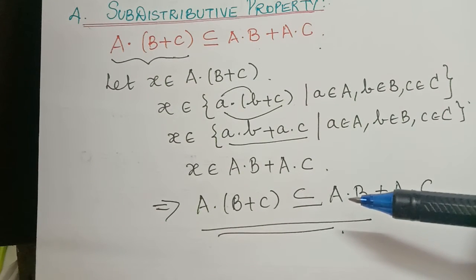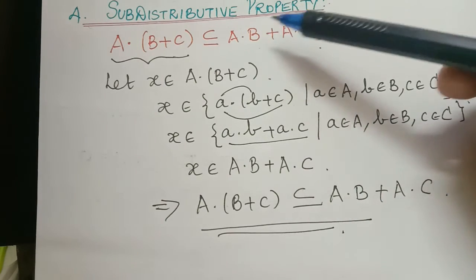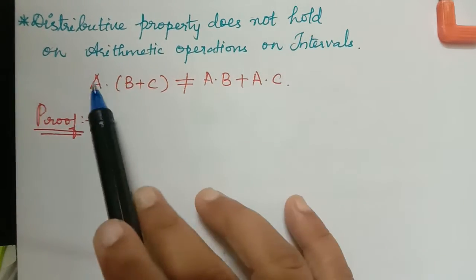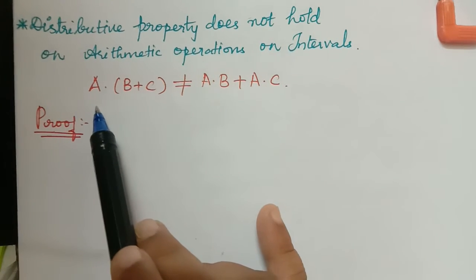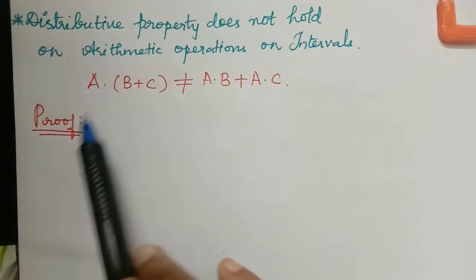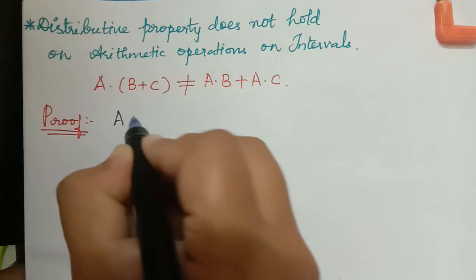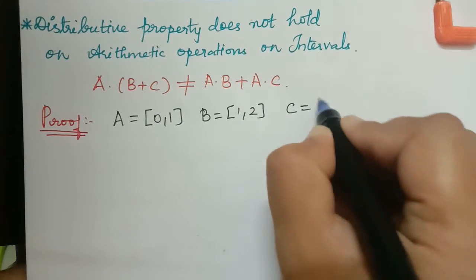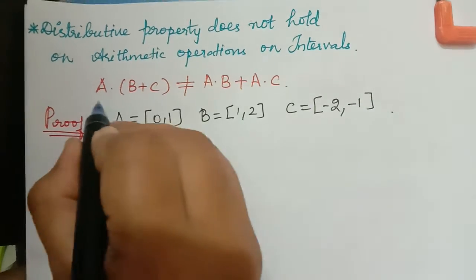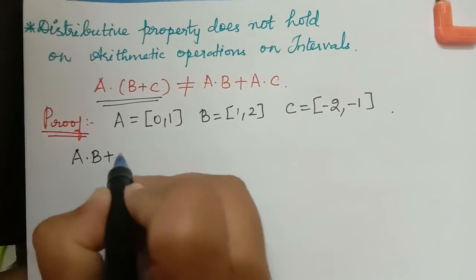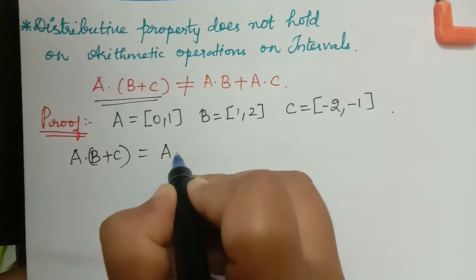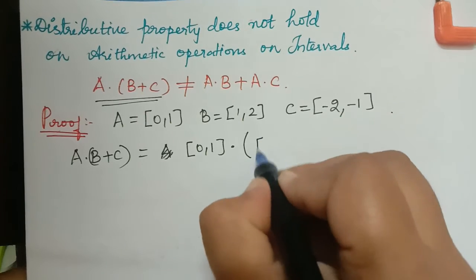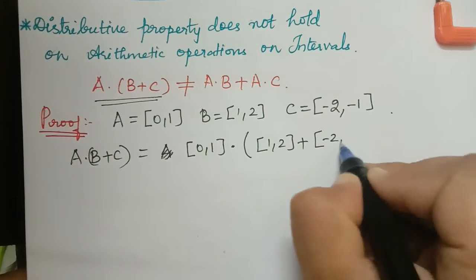Now we shall show that the distributive property does not hold for arithmetic operations on intervals. We have to prove that a·(b+c) is not equal to a·b + a·c. In order to prove that, let us consider an example. Let a equal [0, 1], b equal [1, 2], and c equal [-2, -1]. Let us consider the left-hand side: a multiplied with (b plus c).